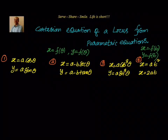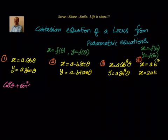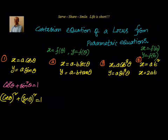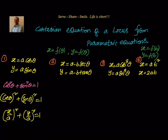The first one: x = a·cosθ, y = a·sinθ. The trigonometric identity we have is cos²θ + sin²θ = 1. We can write (cosθ)² + (sinθ)² = 1. Here cosθ = x/a and sinθ = y/a, so substituting: (x/a)² + (y/a)² = 1. This simplifies to x² + y² = a².